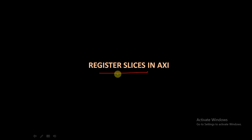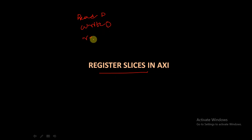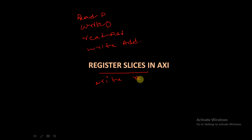What is a register slice? In the AXI protocol, a register slice allows for the insertion of additional pipeline registers in any channel. In the AXI protocol, we have basically five channels: the read data channel, write data channel, read address channel, write address channel, and write response channel.